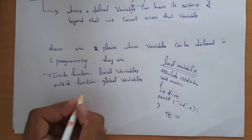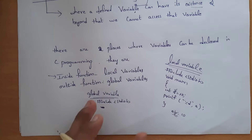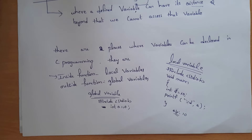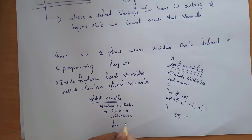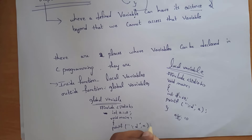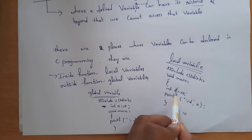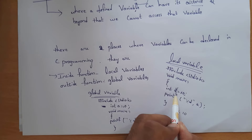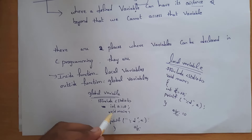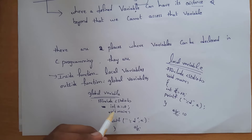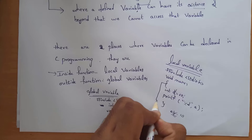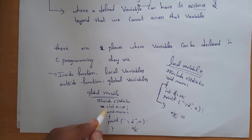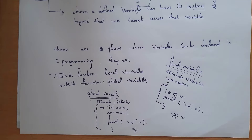Now I will explain the program for a global variable. I written #include stdio.h, after that int a equal to 10 — here I am declaring the variable outside the function, so we call this a as a global variable. Inside void main I written printf %d comma a, and you will get output as 10. Variable declared inside the function is local, and variable declared outside the function is global.